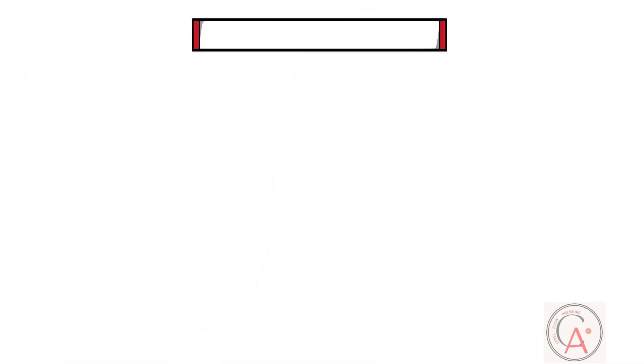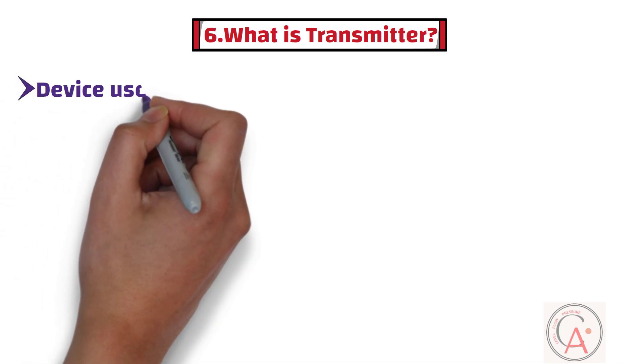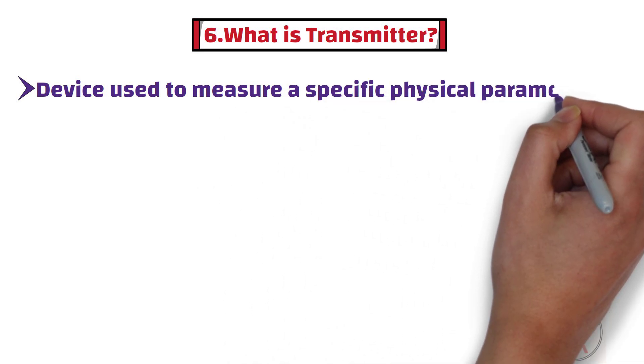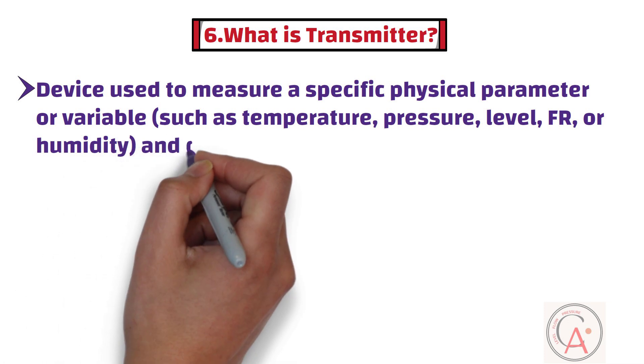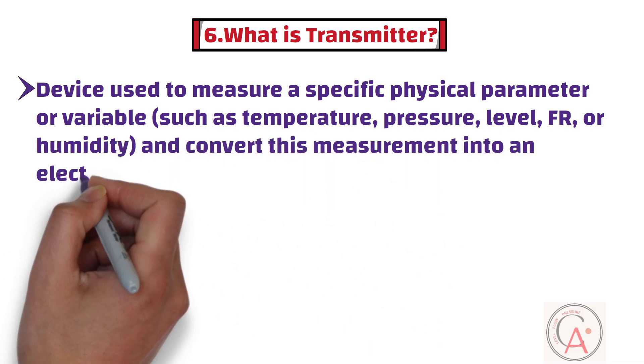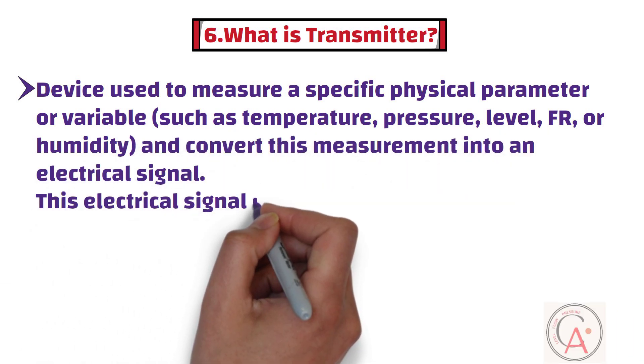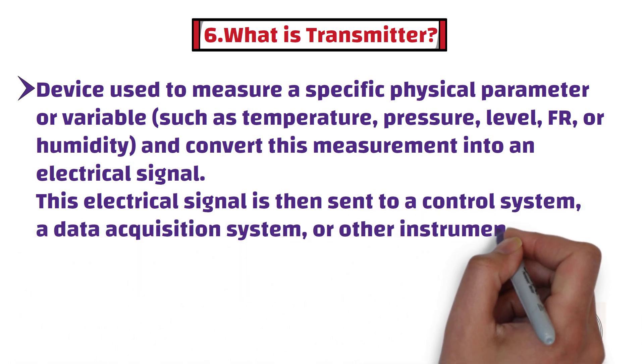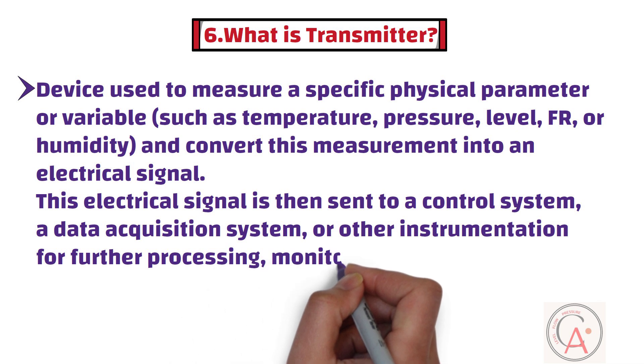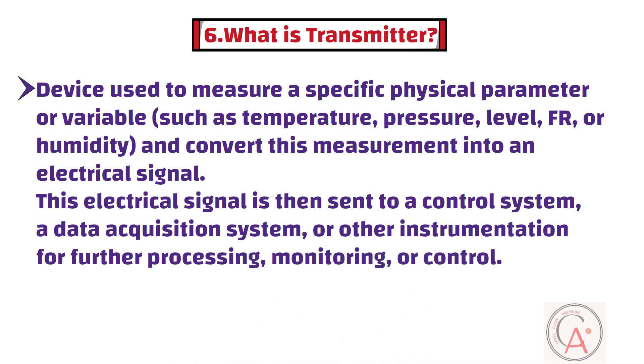The sixth question is, what is a transmitter? A transmitter, in the context of instrumentation and control systems, is a device used to measure a specific physical parameter or variable such as temperature, pressure, level, flow rate, or humidity, and convert this measurement into an electrical signal. This electrical signal is then sent to a control system, a data acquisition system, or other instrumentation for further processing, monitoring, or control.